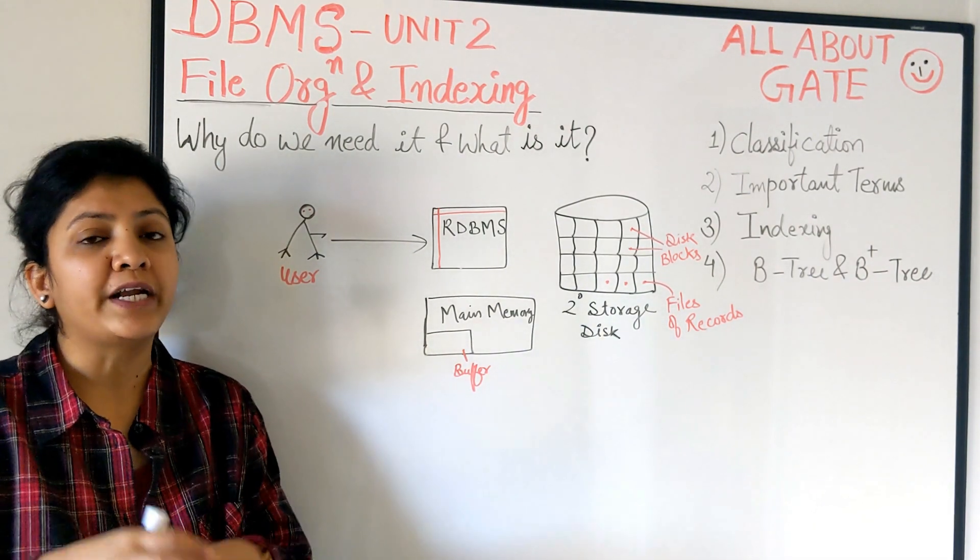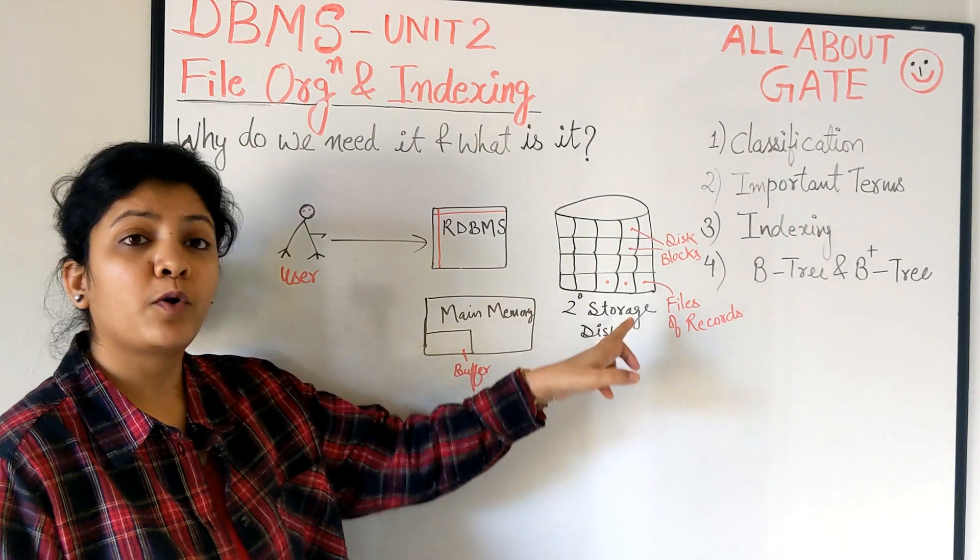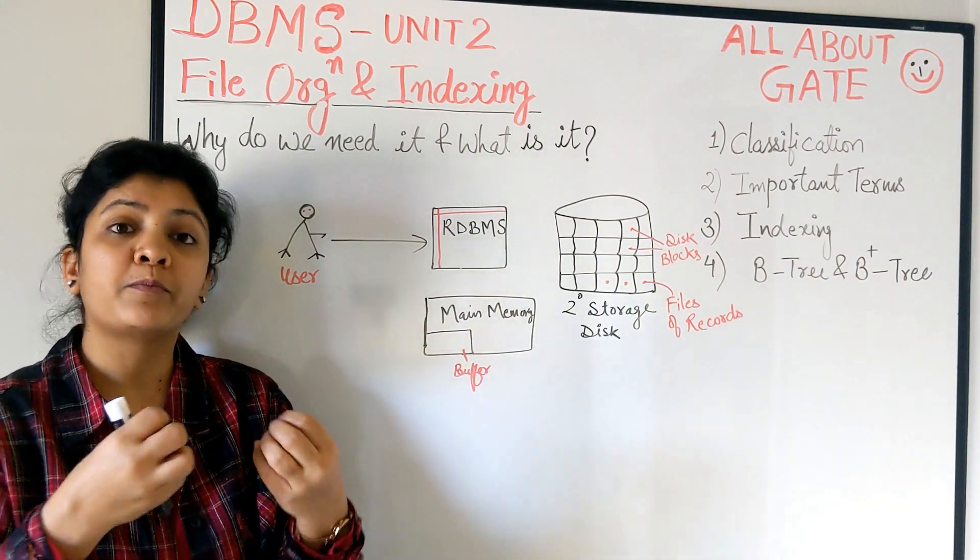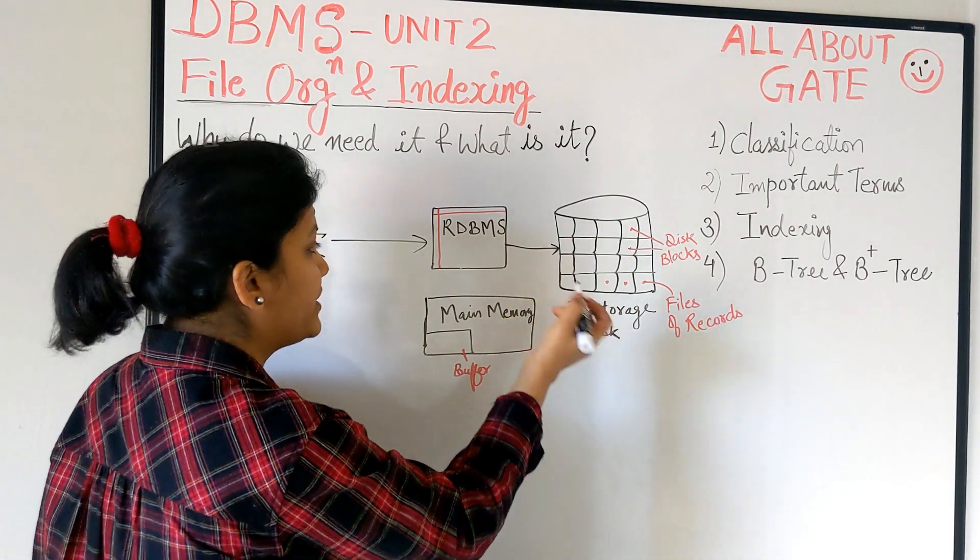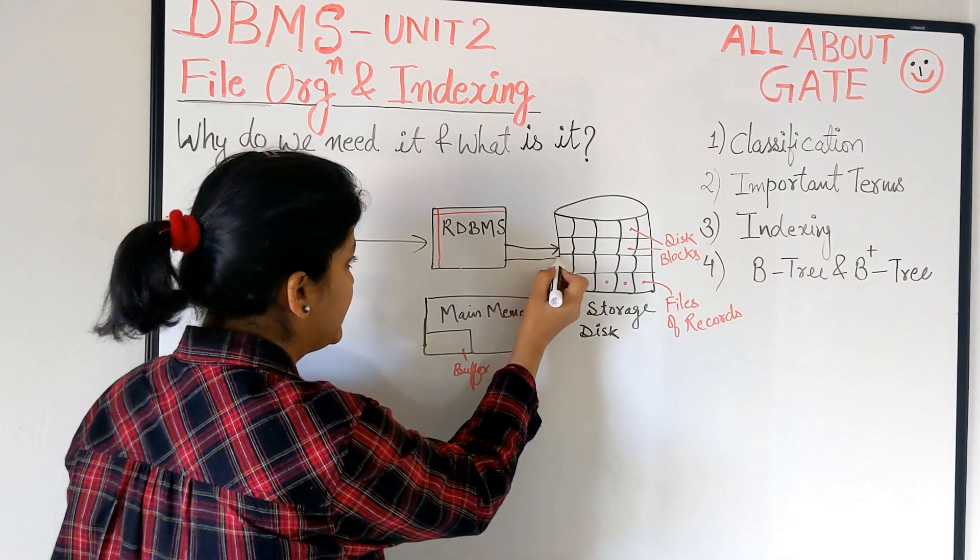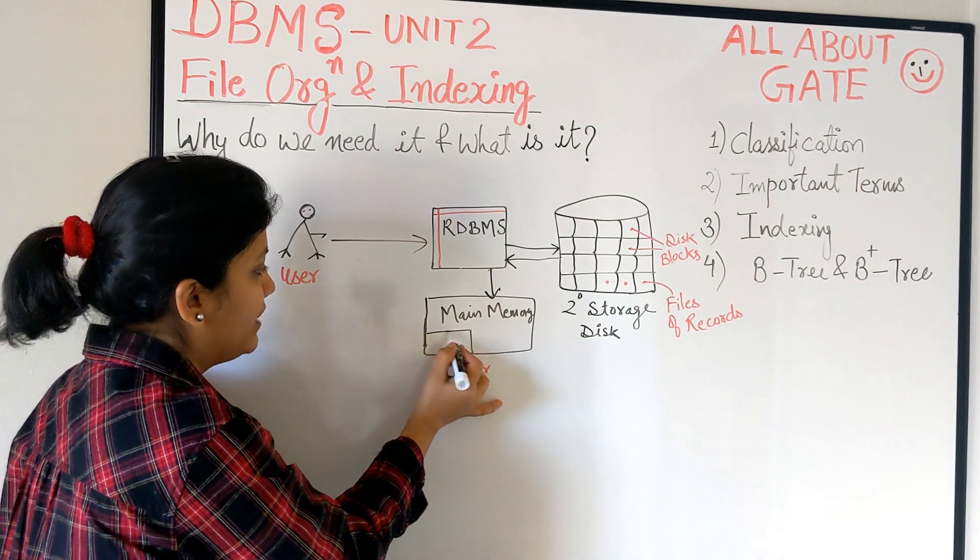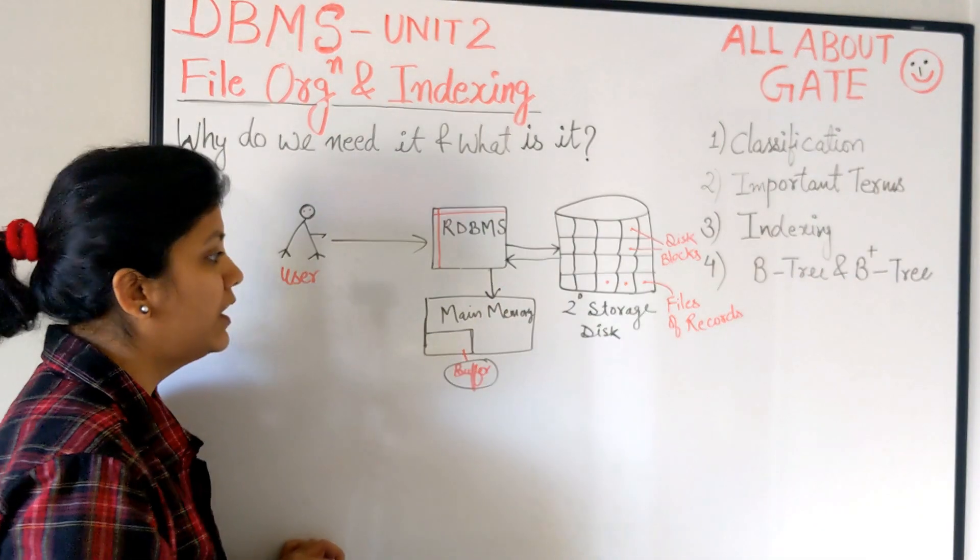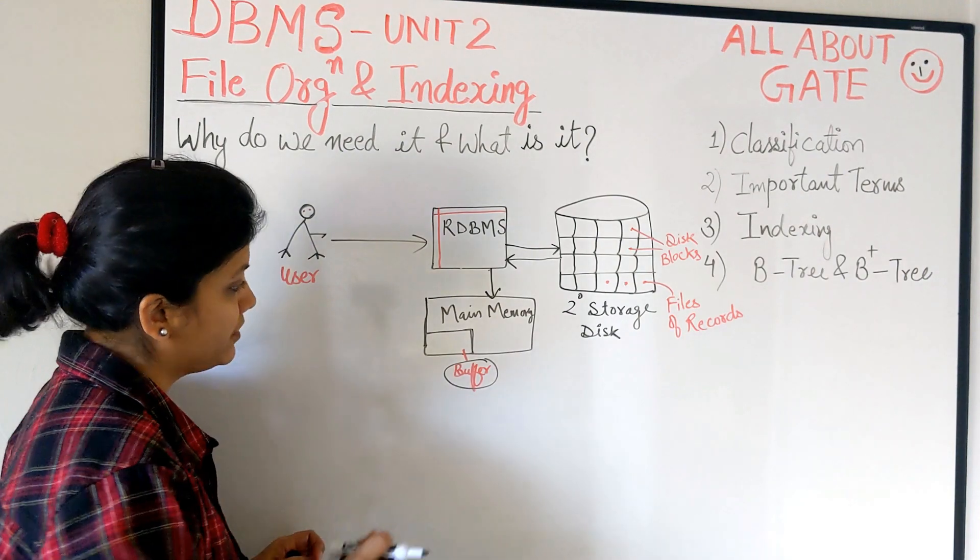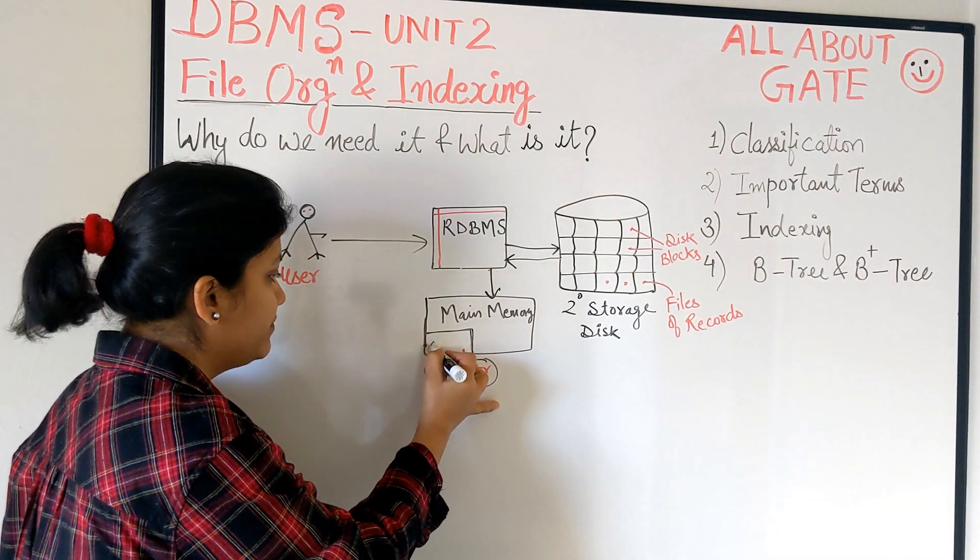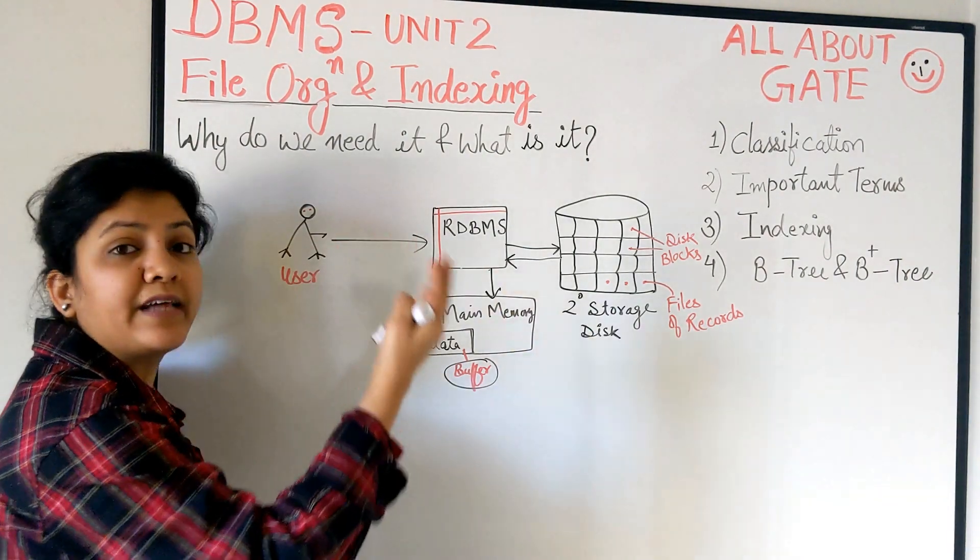When data stored on disk is organized as files of records and file records are grouped into disk blocks, whenever we're accessing a record, we're accessing a disk block. We make use of block access time. The query comes, the location part locates where the data is, the data comes back to the DBMS, and the DBMS loads it into main memory. In the main memory, we have the buffer pool. From the buffer pool, one particular buffer is allocated to that application or user query, and the data comes here.